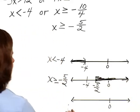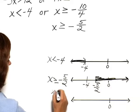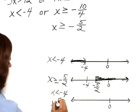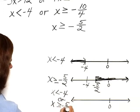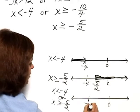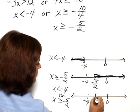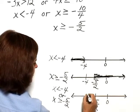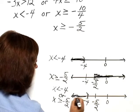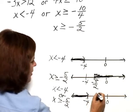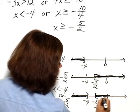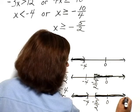Now the compound inequality said that x had to be less than negative 4, or x was greater than or equal to negative 5 halves. That means it can be in one interval or the other. So our solution set will be the union of the two intervals — the set of all numbers less than negative 4 and the set of all numbers greater than or equal to negative 5 halves.